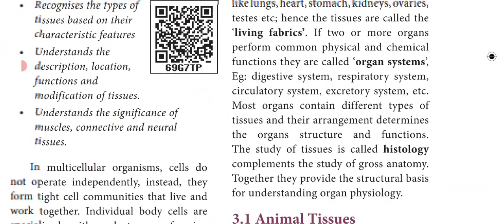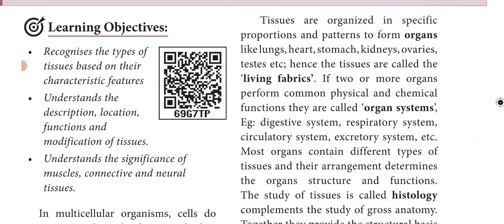Tissues are organized in specific proportions and patterns to form the organs, such as the lungs, heart, stomach, kidneys, and ovaries. All these organs are made up of tissues, hence tissues are called the living fabrics. If two or more organs perform common physical and chemical functions, they are called organ systems. Organs that are similar in structure and function, when grouped together, form organ systems.